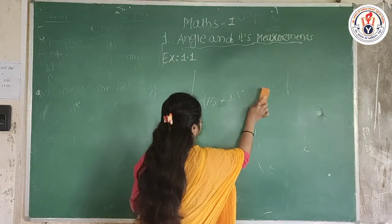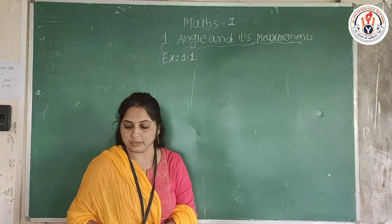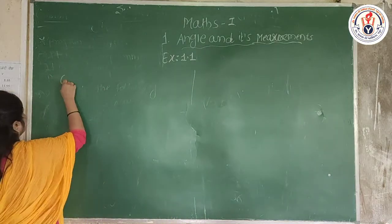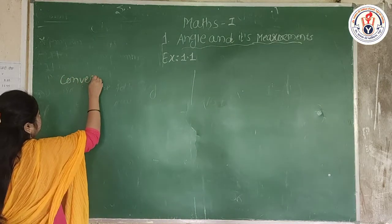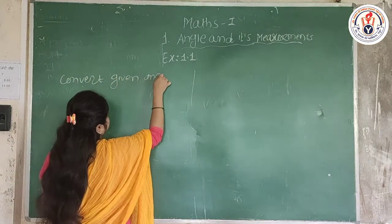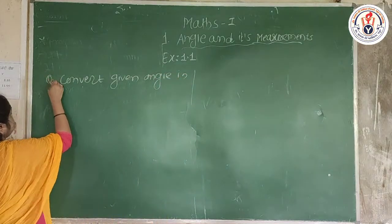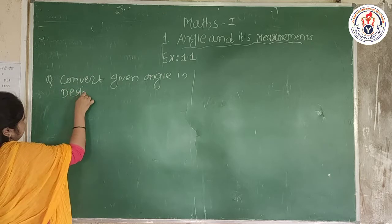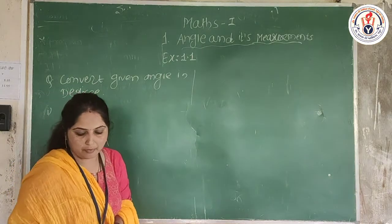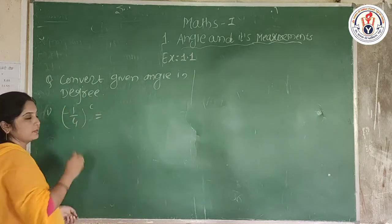Next question: convert the following angles into degrees. The angle given is minus 1/4 radians. We need to convert this radian measure into degrees.